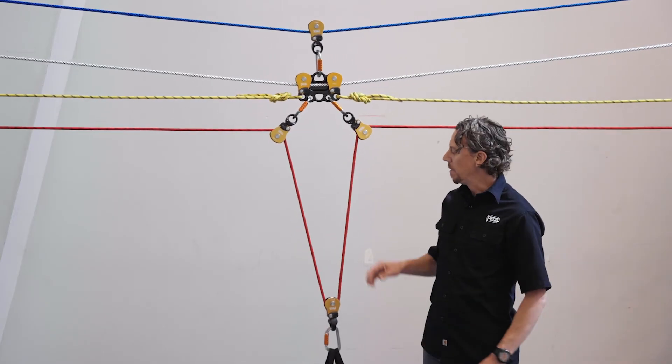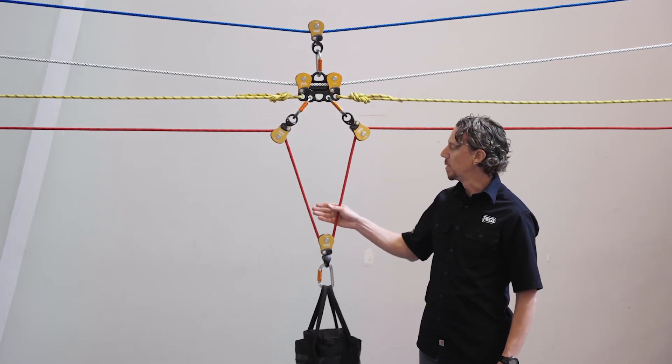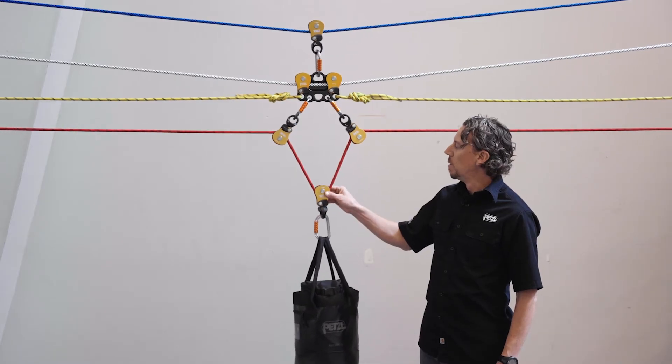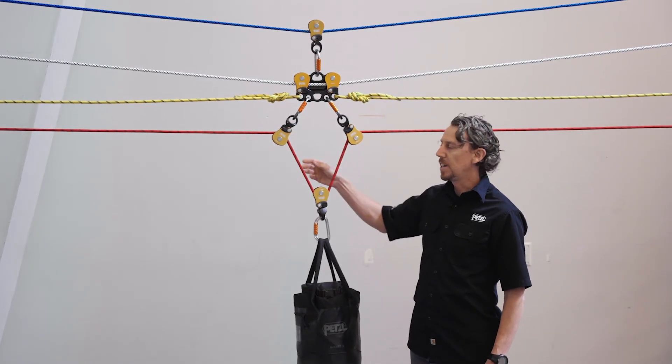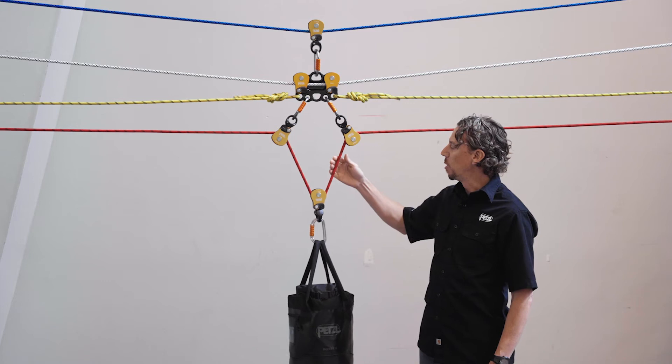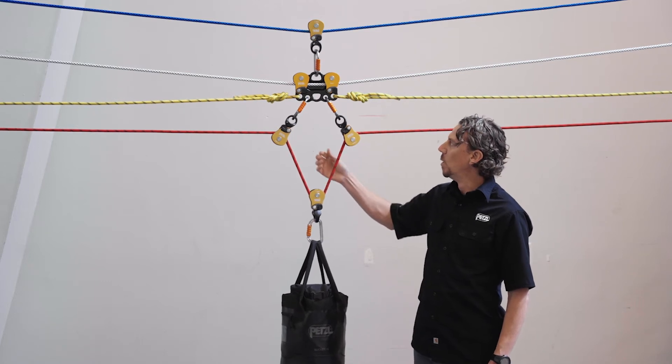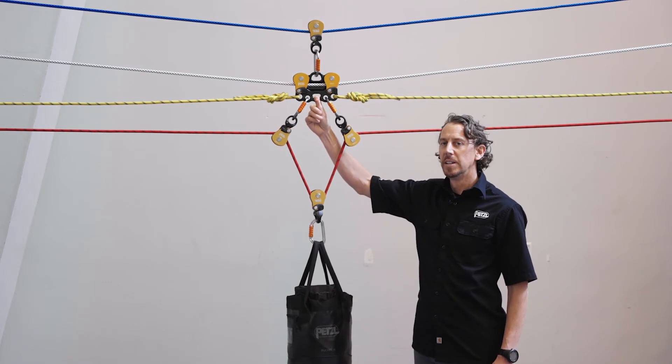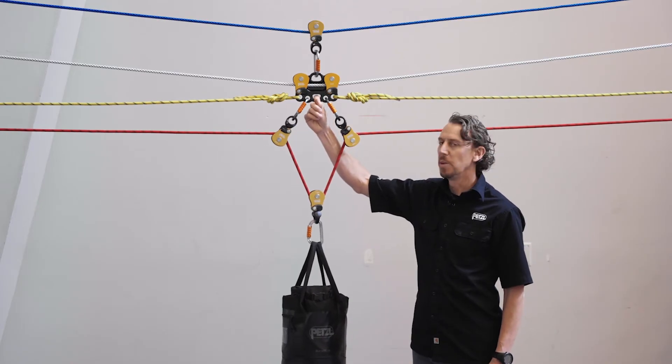Now for clarity, I have not installed a backup to the Reeving system here, but I could do so by attaching ASAP locks to the rope on each side of the pulley or by connecting an independent vertical line to the center attachment hole on the Reeve.